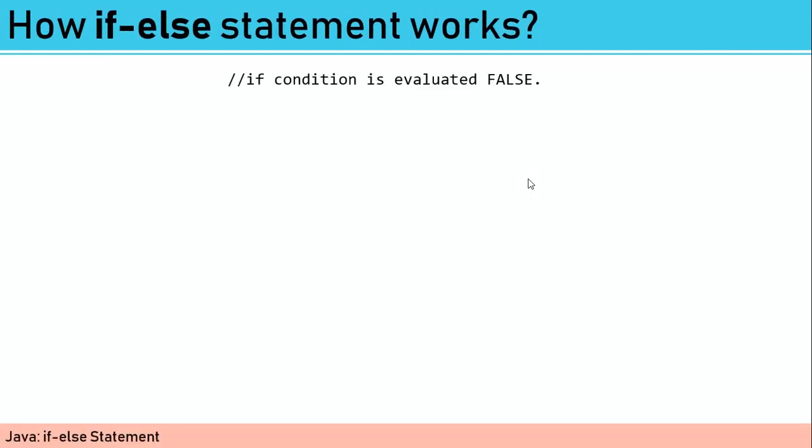So let us now simulate if the condition is evaluated false. Say, for example, the value variable now is equal to 1, and the condition is if value is greater than 5. So basically, it will be evaluated false. So what will happen?